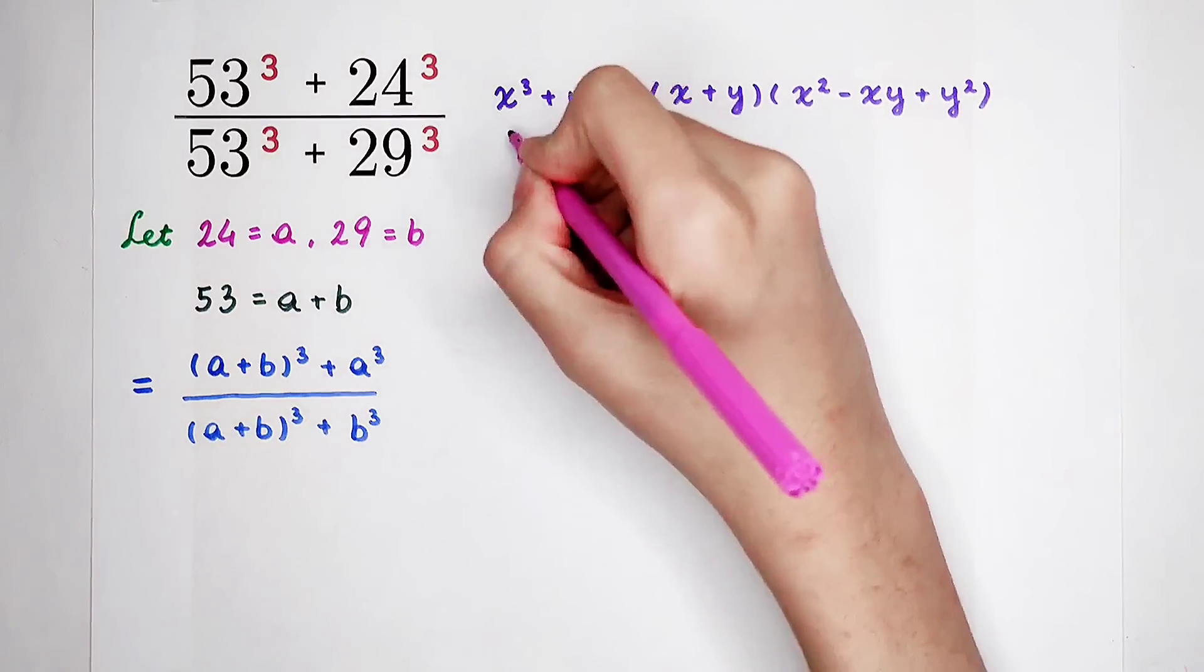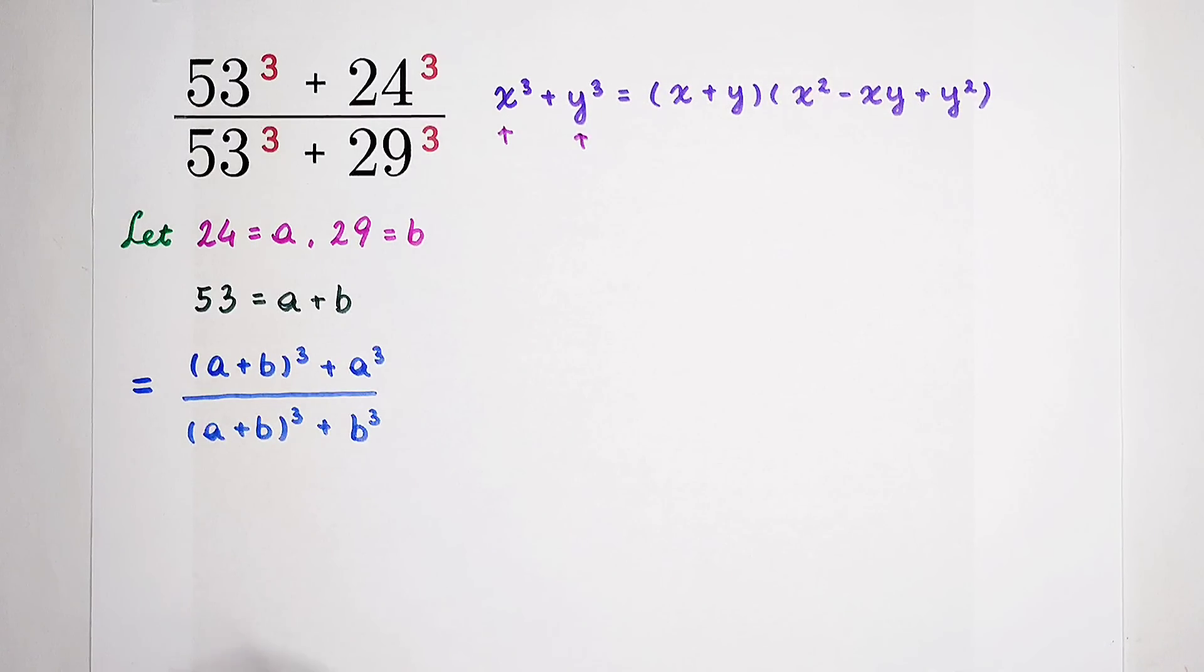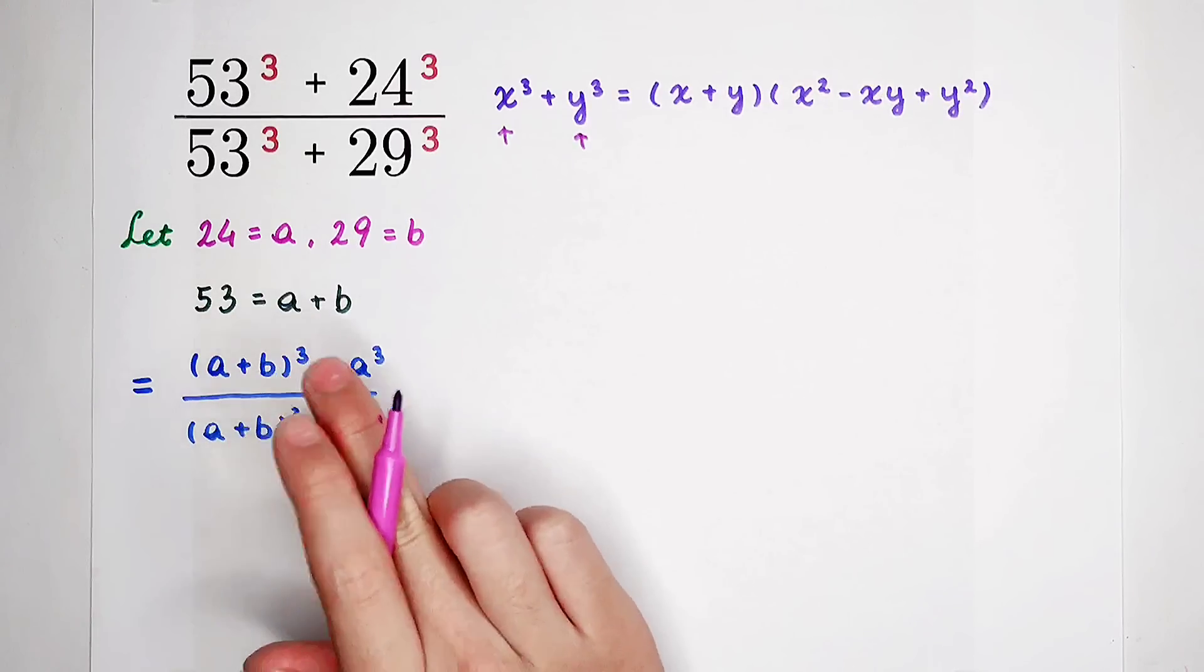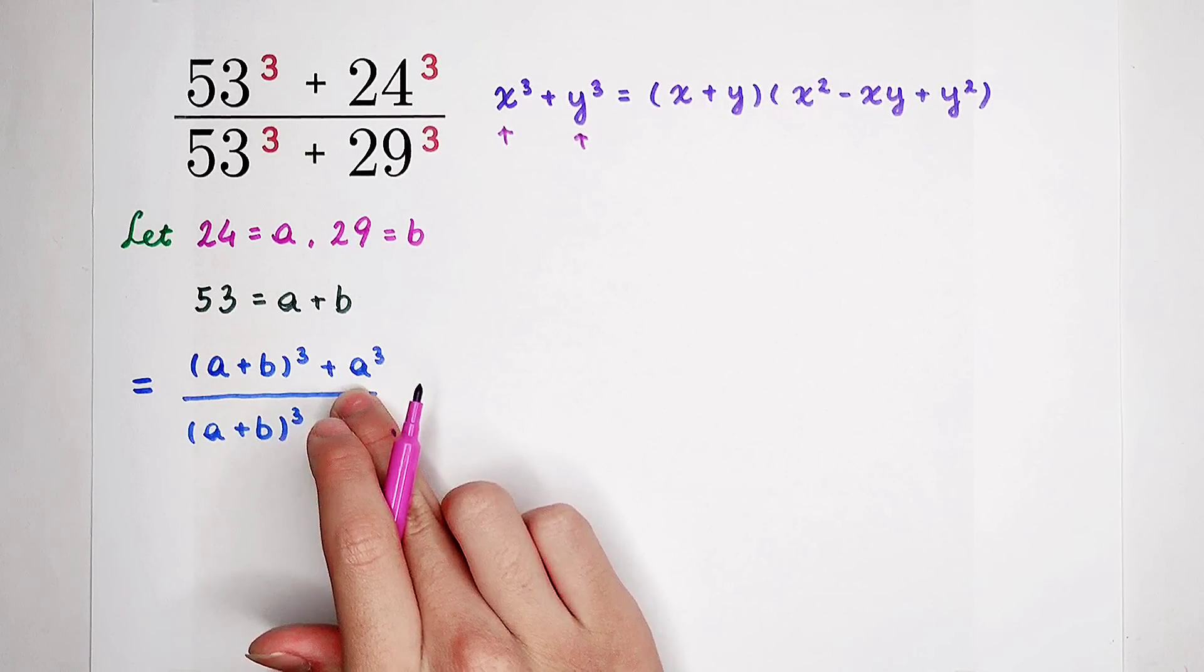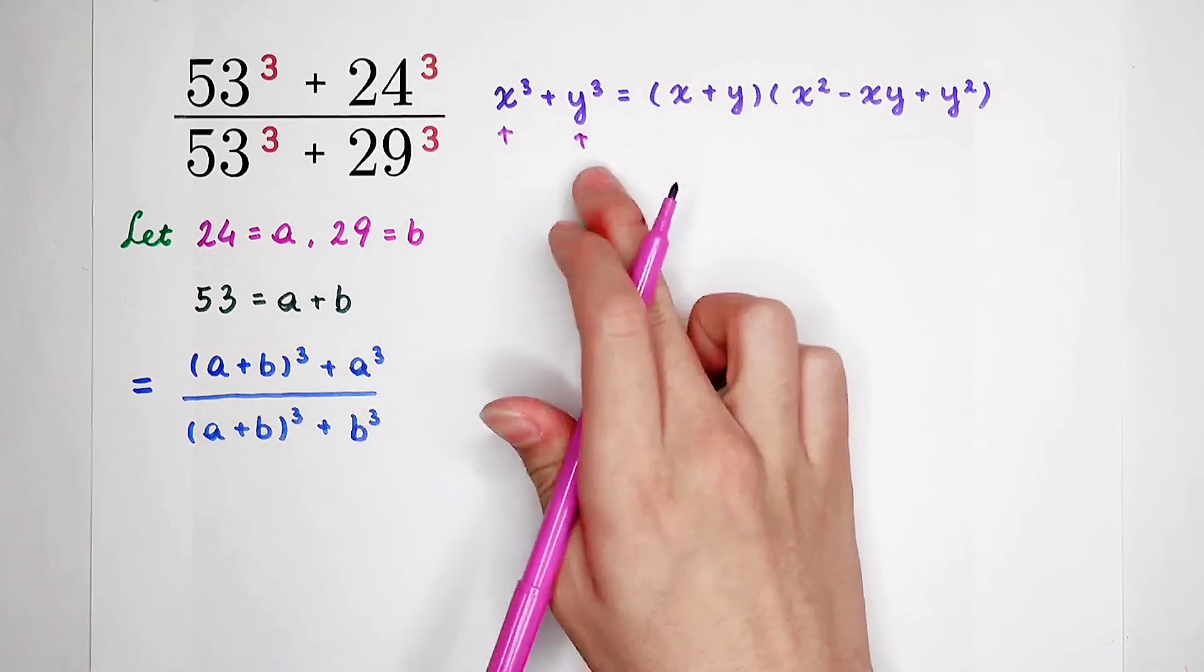Now, be careful. What is x? What is y? Ignore this problem. Of course, x is a plus b, and y is a for the numerator. And for the denominator, x is a plus b, and y is b.